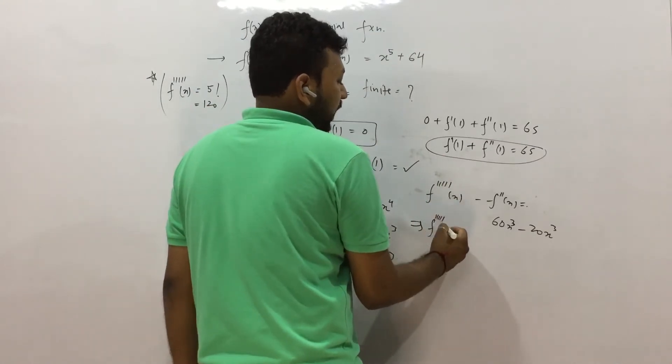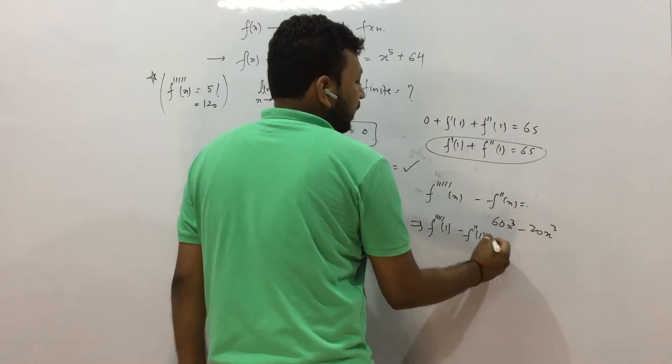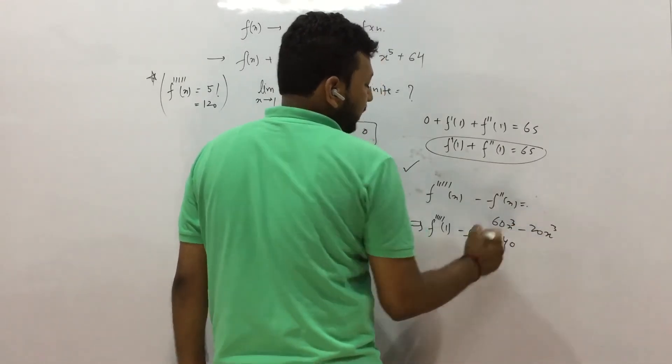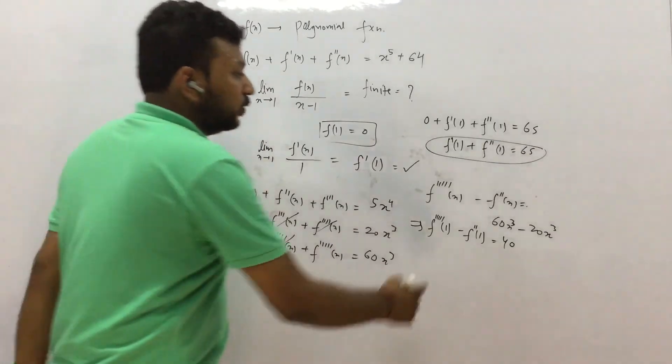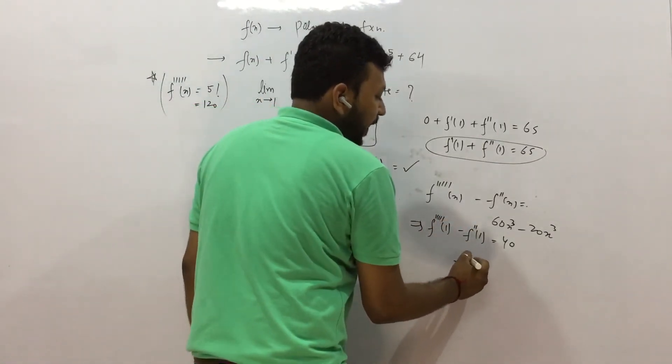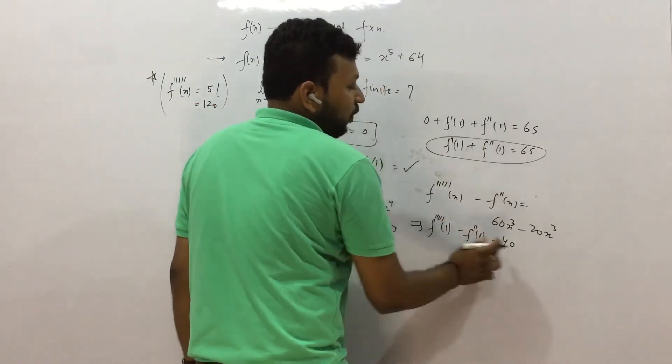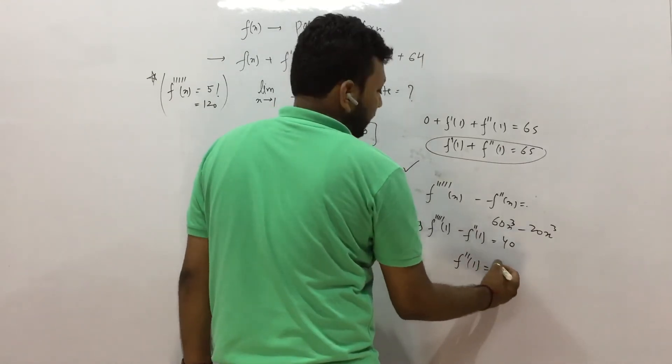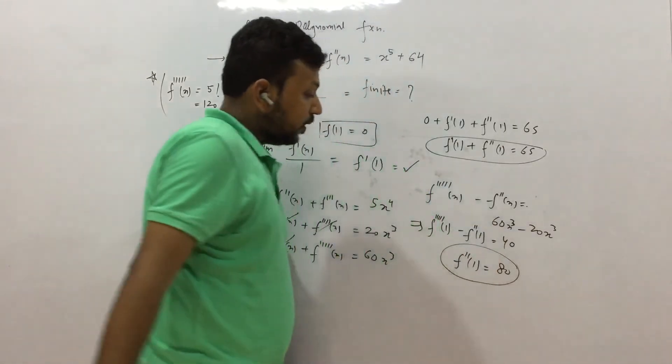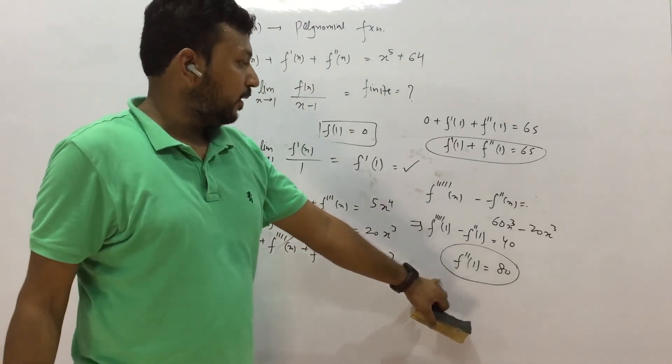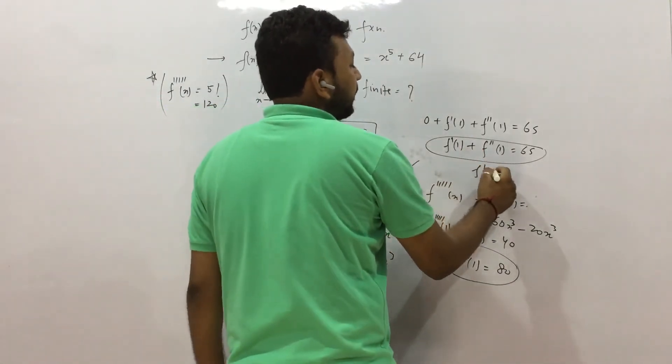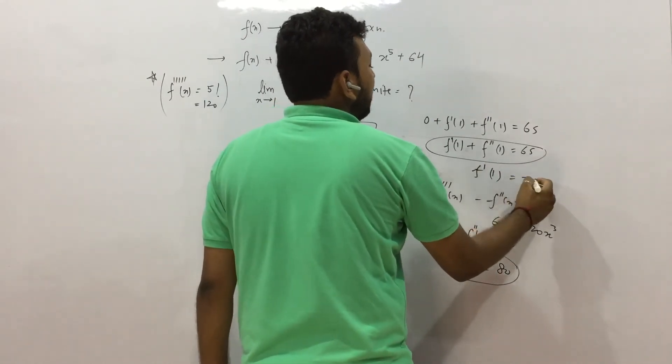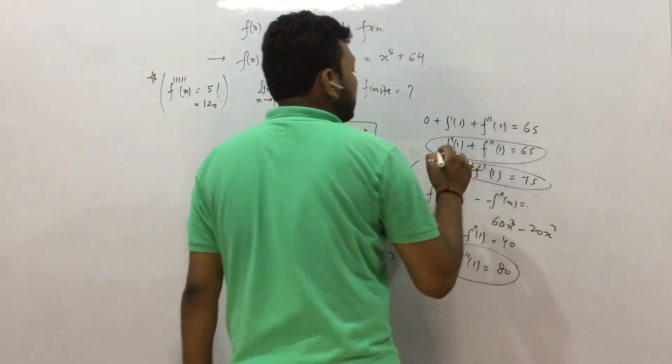We have f⁵(1) - f''(1) = 40. And this value we know already, 140. So from here we can have f''(1) = 140 - 40, that means 80. So f''(1) is 80. We put the value here and we have f'(1) as -15.